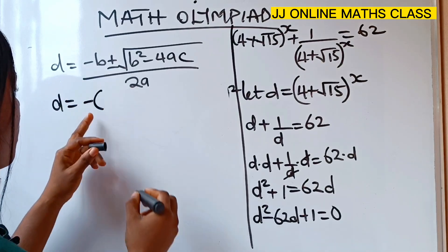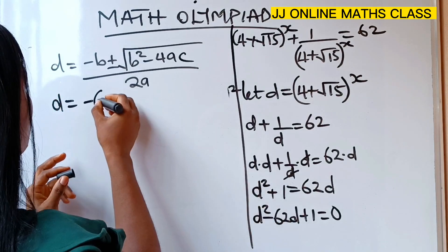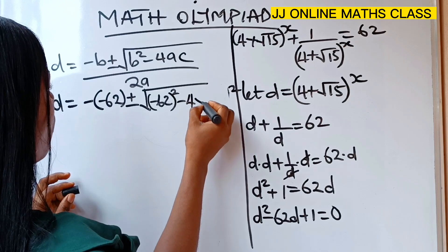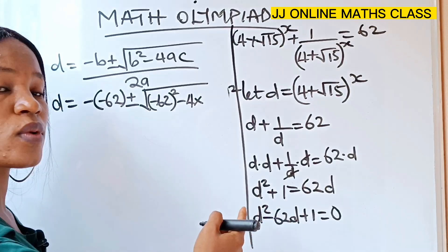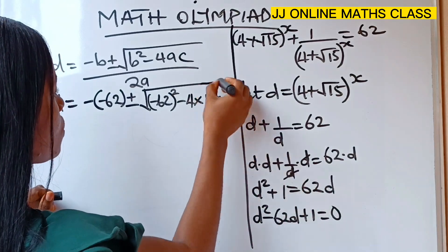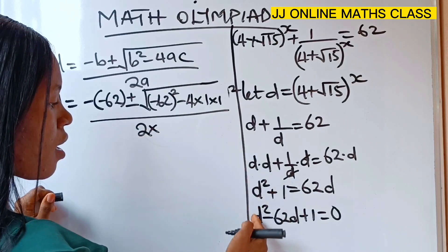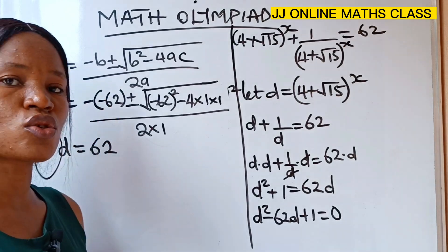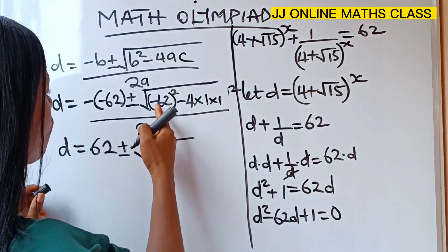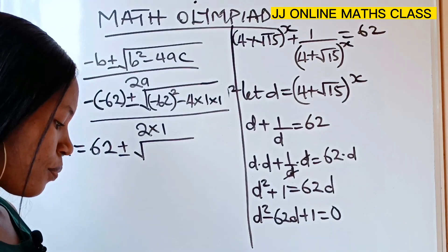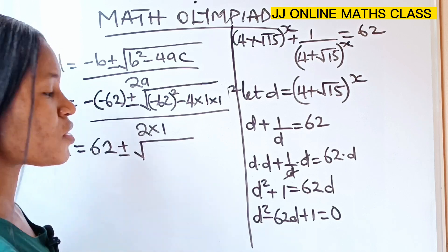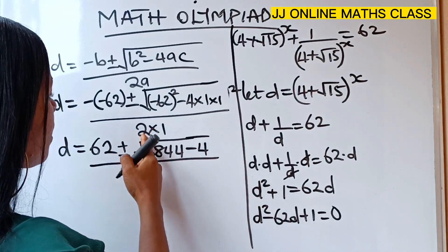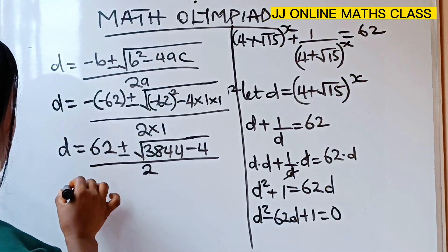So d is equal to: minus b, where b is minus 62, so we get plus 62; plus or minus square root of minus 62 all squared, minus 4 times a which is 1, times c which is 1; all divided by 2 times a which is 1, giving us 2. That simplifies to: 62 plus or minus square root of 3844 minus 4, all divided by 2.